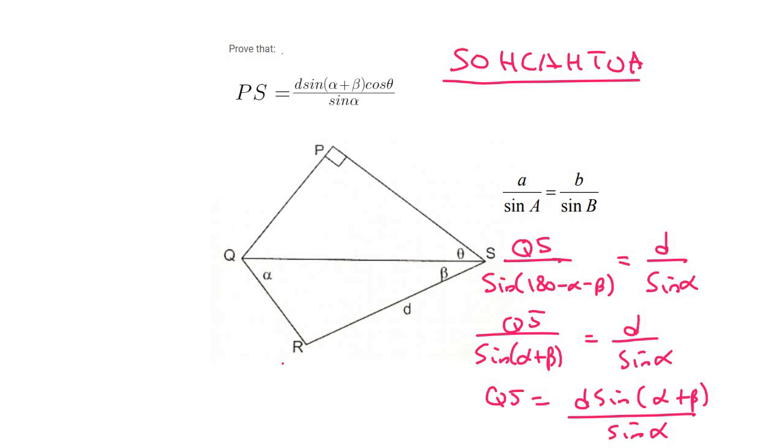All right. So we're trying to find PS. Now look how easy this is. We would like PS. We have this angle. So PS would be the adjacent and we have the hypotenuse. So that is just cos. So we can say cos theta is equal to the adjacent, which is PS, over the hypotenuse, which is QS.